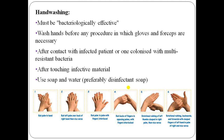You must wash hands before any procedure in which gloves and forceps are necessary, after contact with an infected patient or one colonized with multi-resistant bacteria, and after touching infective materials. The steps of hand washing are: rub palm to palm, rub left palm over back of right hand then vice versa, rub palm to palm with fingers interlaced, and rotational rubbing of left thumb clasped in right palm then vice versa, followed by rotational rubbing backwards and forwards with clasped fingers.